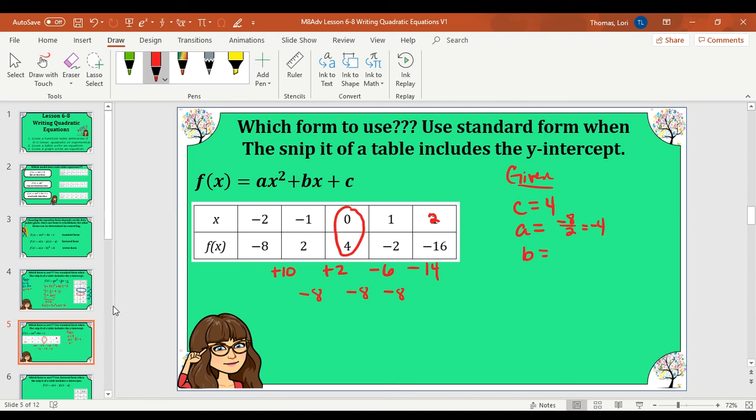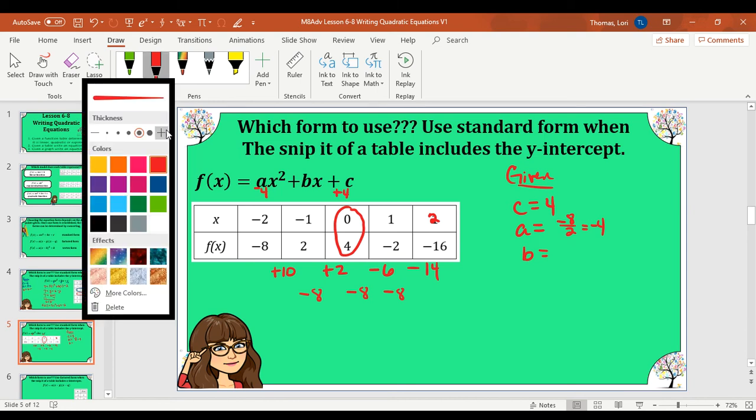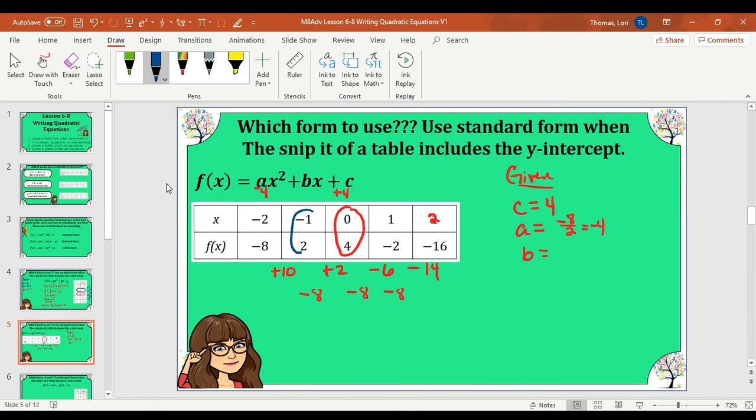Now we're going to find the b value. So we're going to substitute our a value is negative 4. Our c value is plus 4. And we do not know the b value. So let's choose a point. You can use any point other than the point that's already been used, which was our y-intercept. So I'm going to plug in negative 1 for x using parentheses. I'm going to plug in 2 for f of x. A is negative 4. My x value is negative 1. We don't know the b value. That's what we're going to find. My x value again is negative 1. And my c was plus 4. Order of operations, we're going to evaluate this term first. Exponents, that's positive 1 times negative 4. b times negative 1 plus 4.